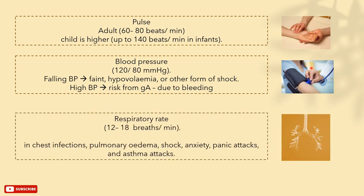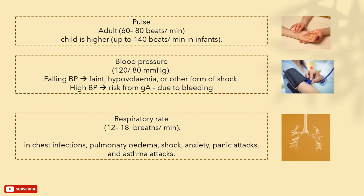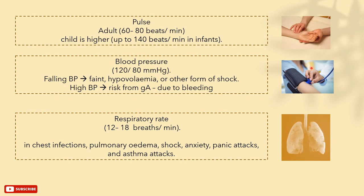Respiratory rate. The normal rate of breathing is about 12 to 18 breath cycles per minute. A cycle is composed of a full inhalation and a full exhalation. In cases of chest infections, pulmonary edema, shock, anxiety, or panic attacks, the patient might suffer from tachypnea, which is a rapid shallow respiratory rate.